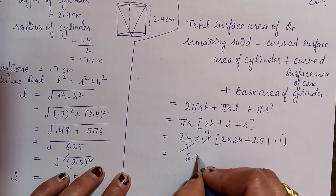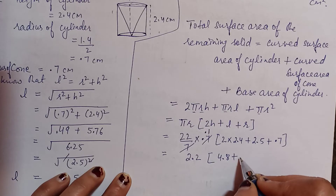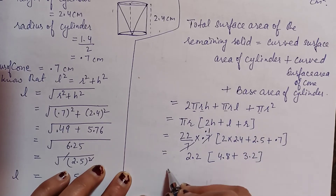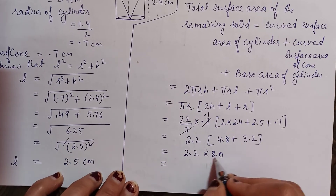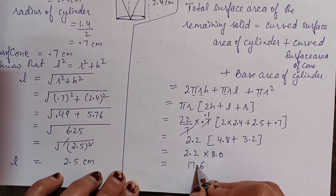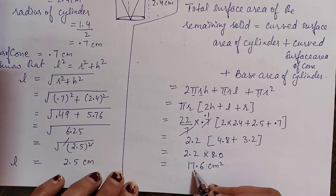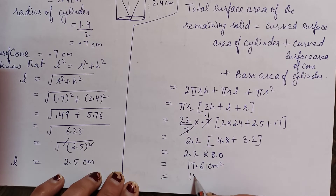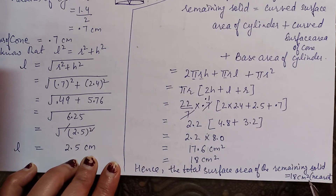After multiplying 2.2 by (2×2.4 + 2.5 + 0.7) = 2.2 × (4.8 + 3.2) = 2.2 × 8 = 17.6, then final answer ≈ 18 cm² to the nearest value. Hence total surface area of remaining solid = 18 cm² (nearest).